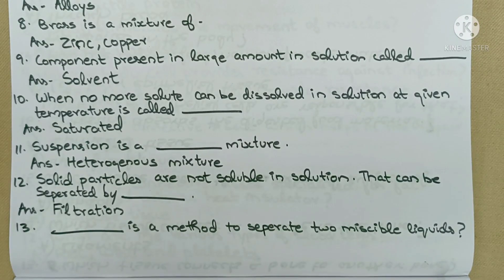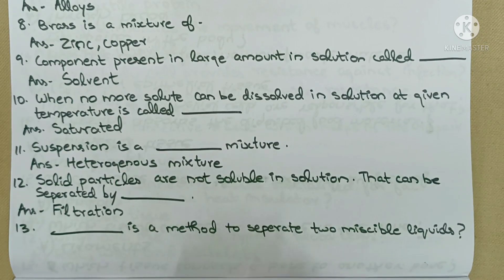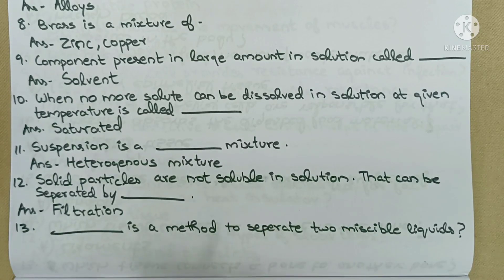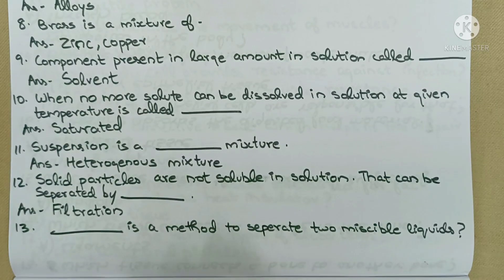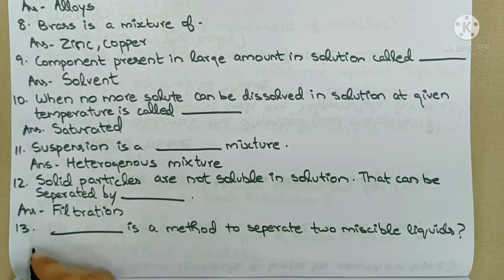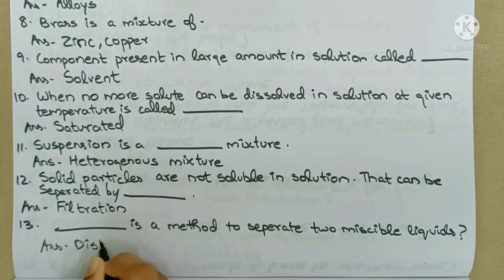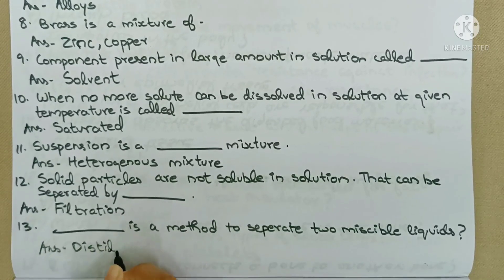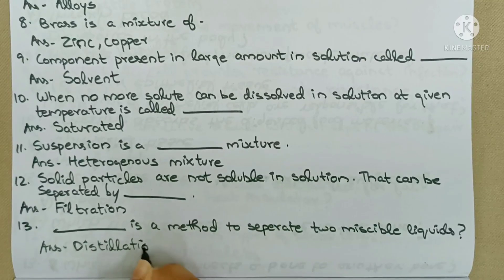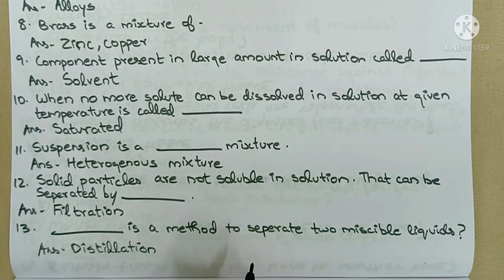Next question: What is the method used to separate two miscible liquids? Miscible liquids are those that can mix together, unlike immiscible liquids which form separate layers. To separate two miscible liquids, we use the distillation technique.